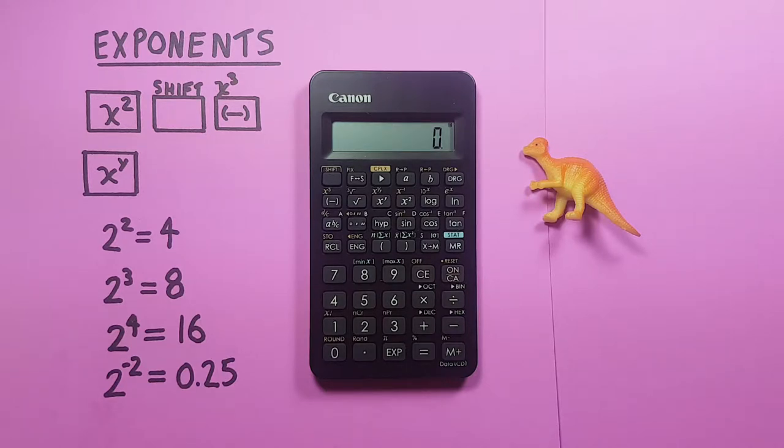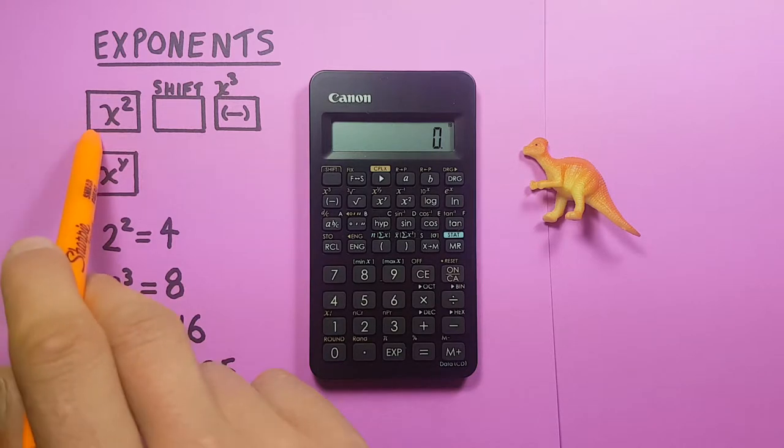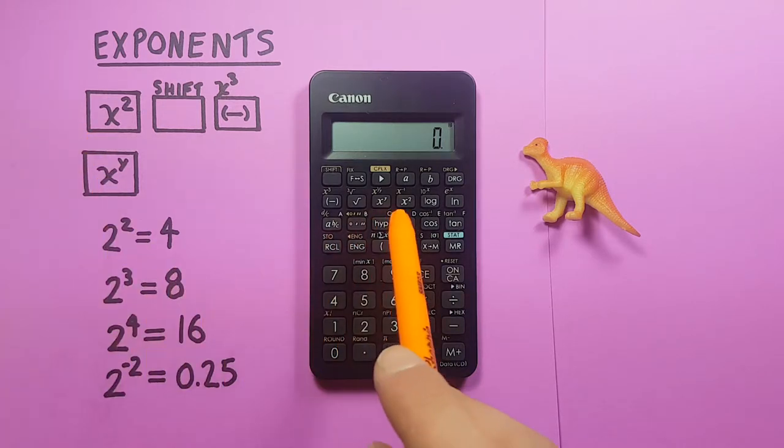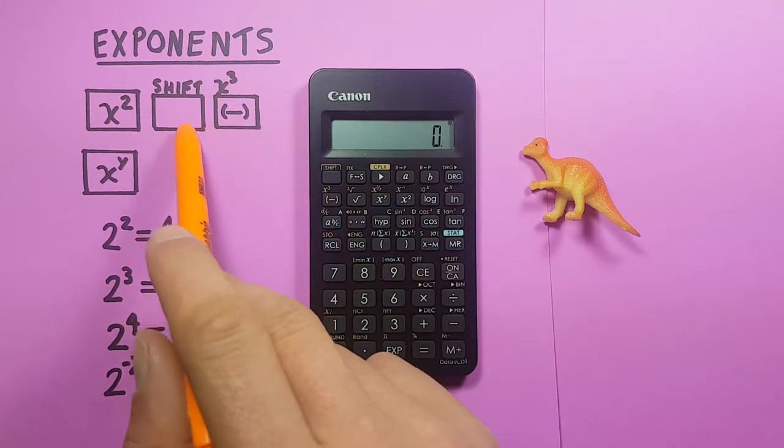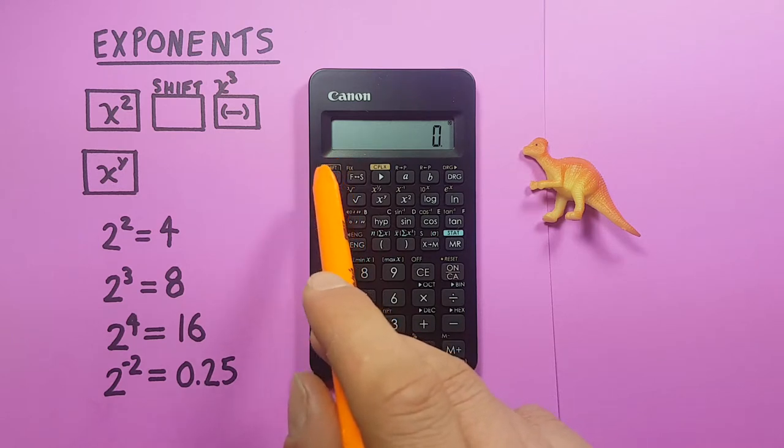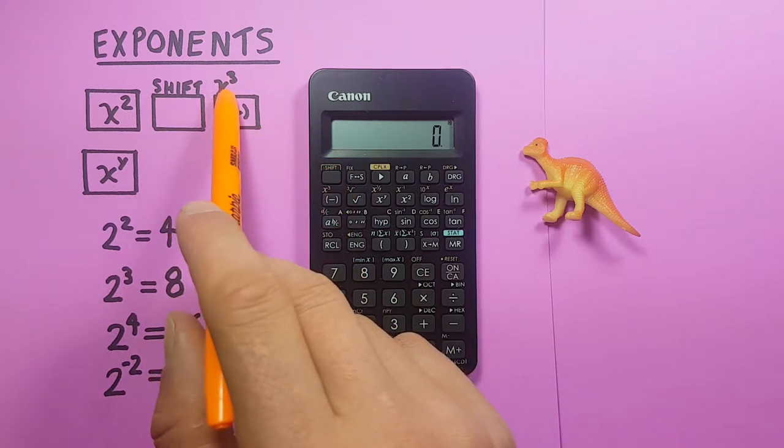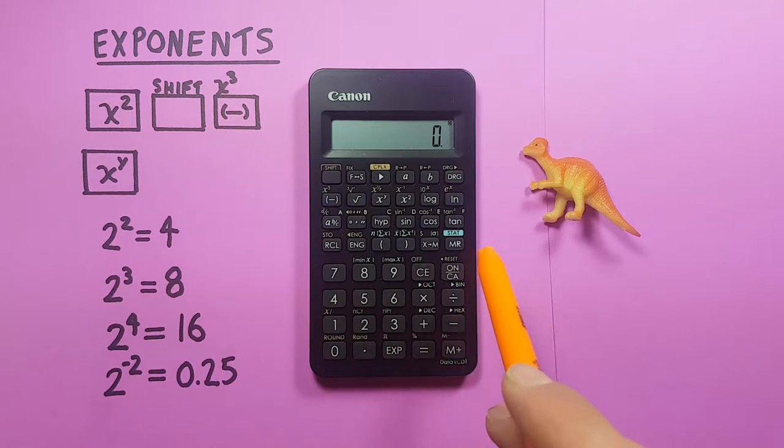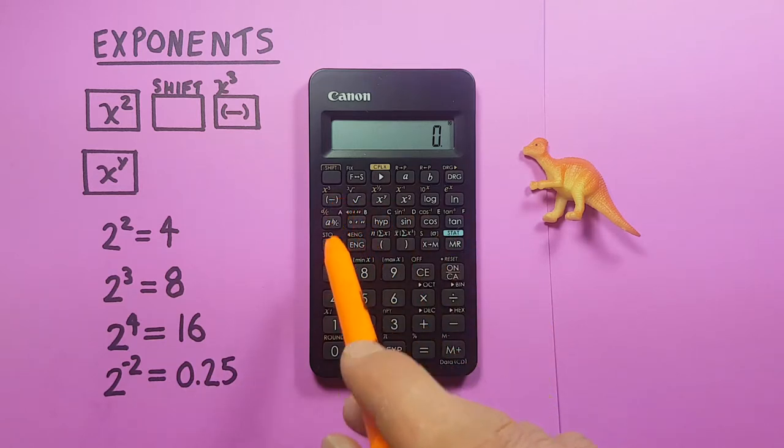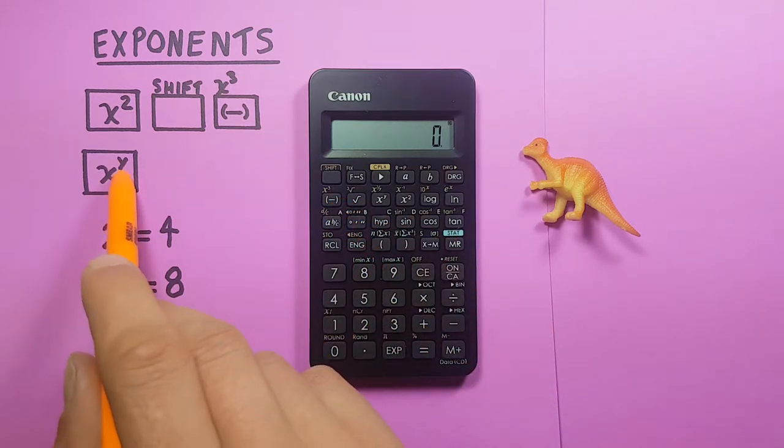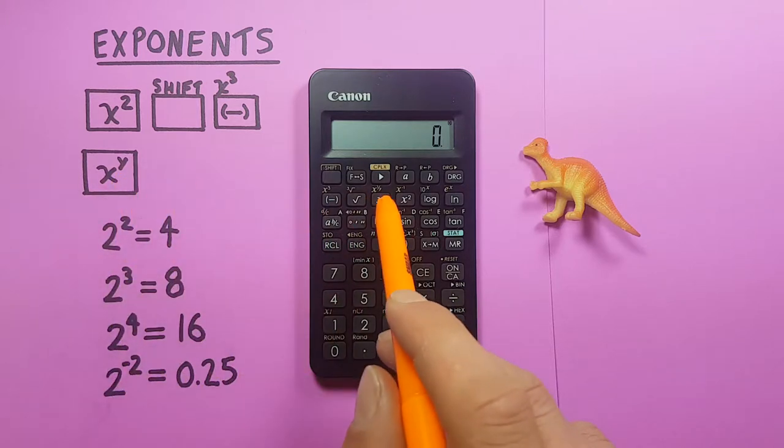Getting started, the keys we'll need are the x squared key located here, the shift key located here, the negative key with the second function of the x cubed located here, and the x to the y key located here.